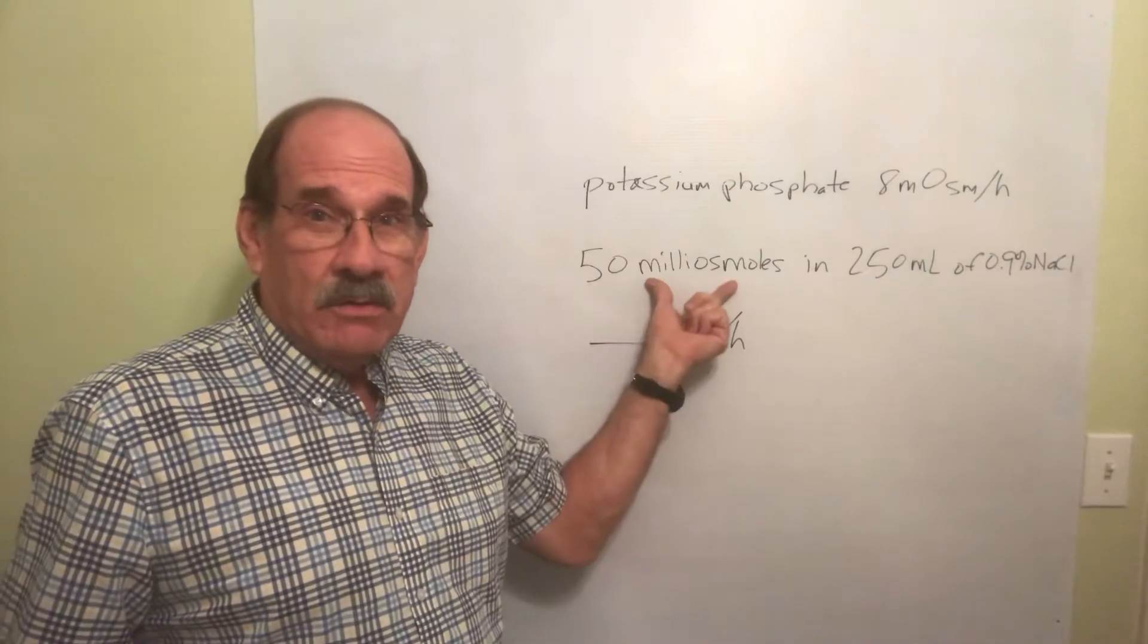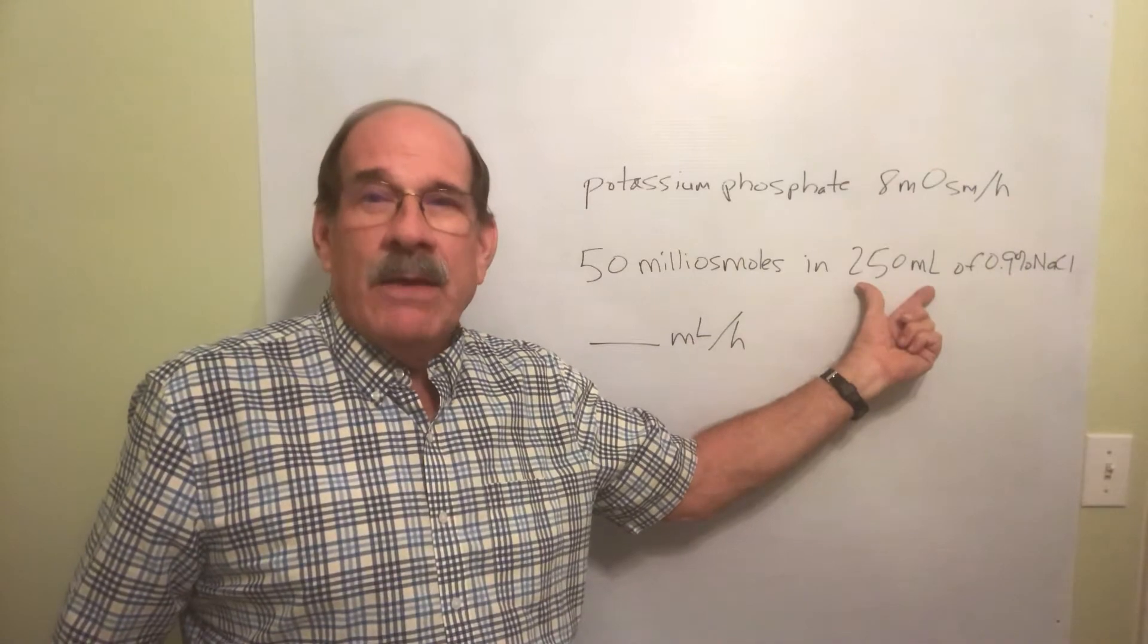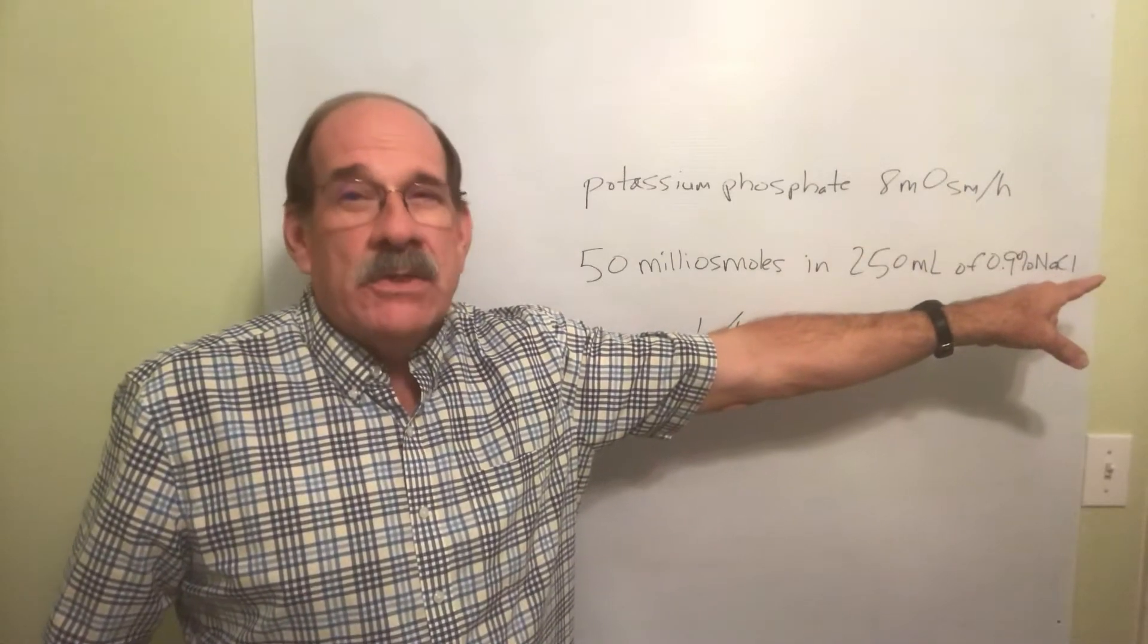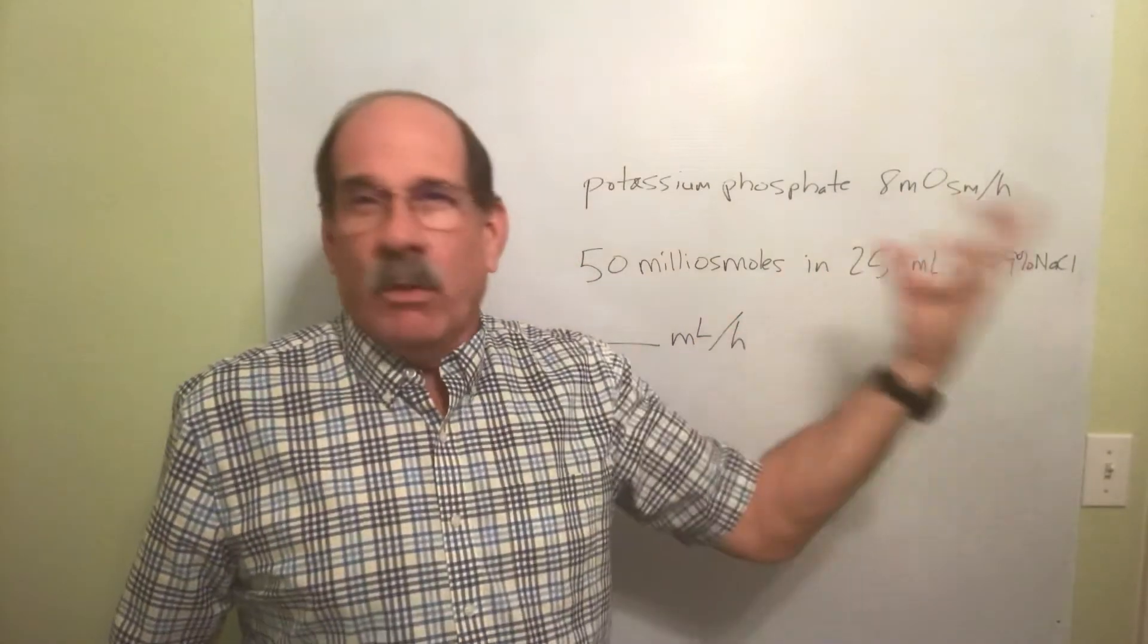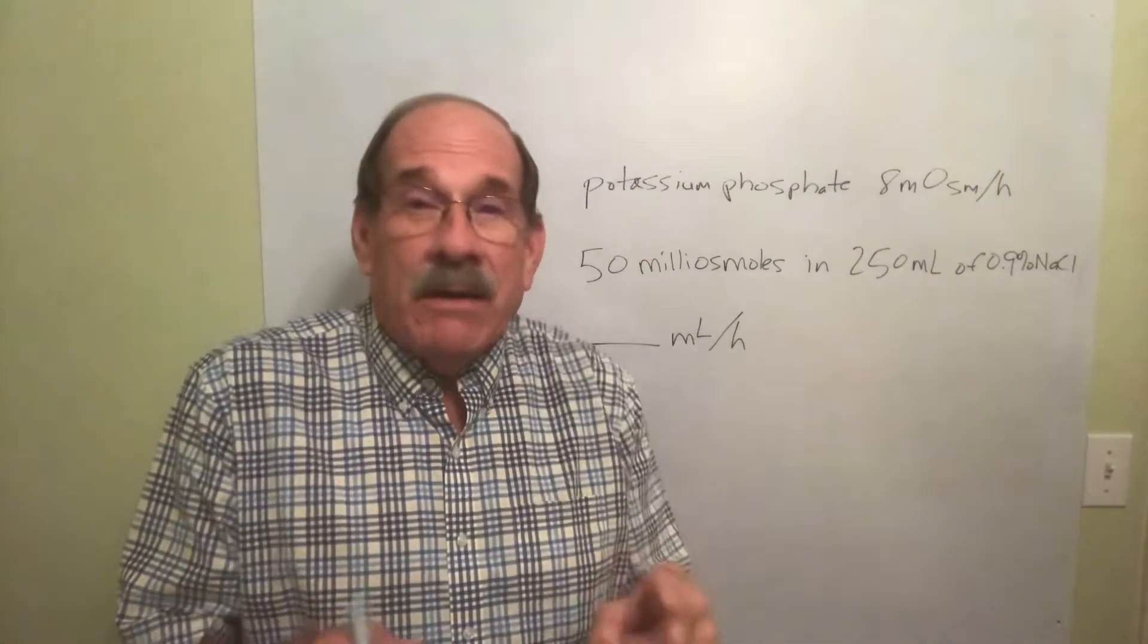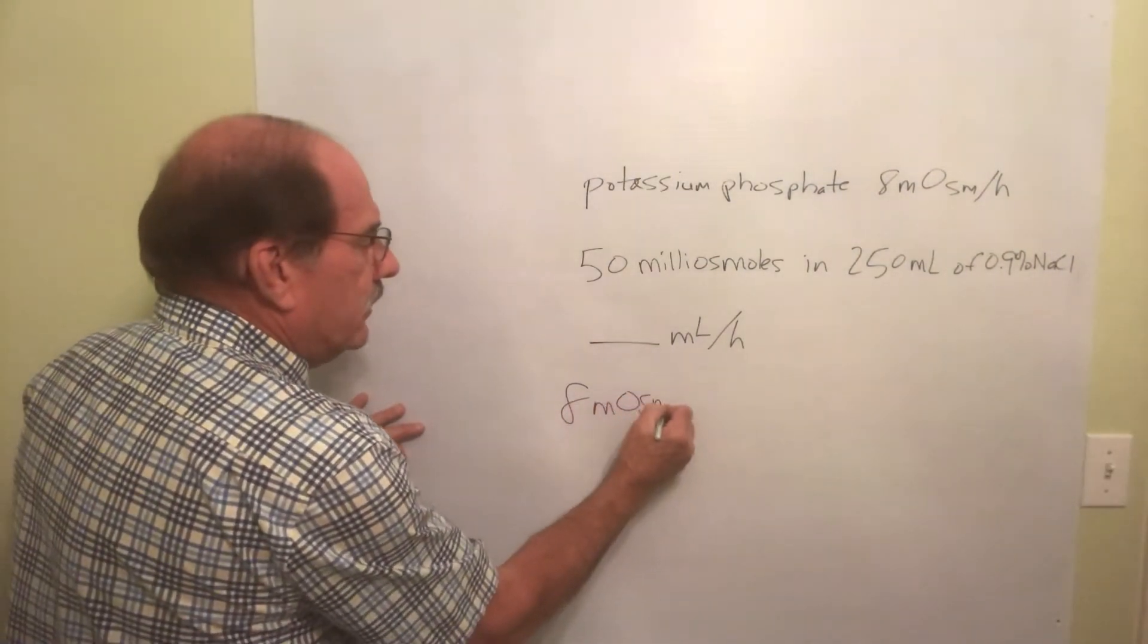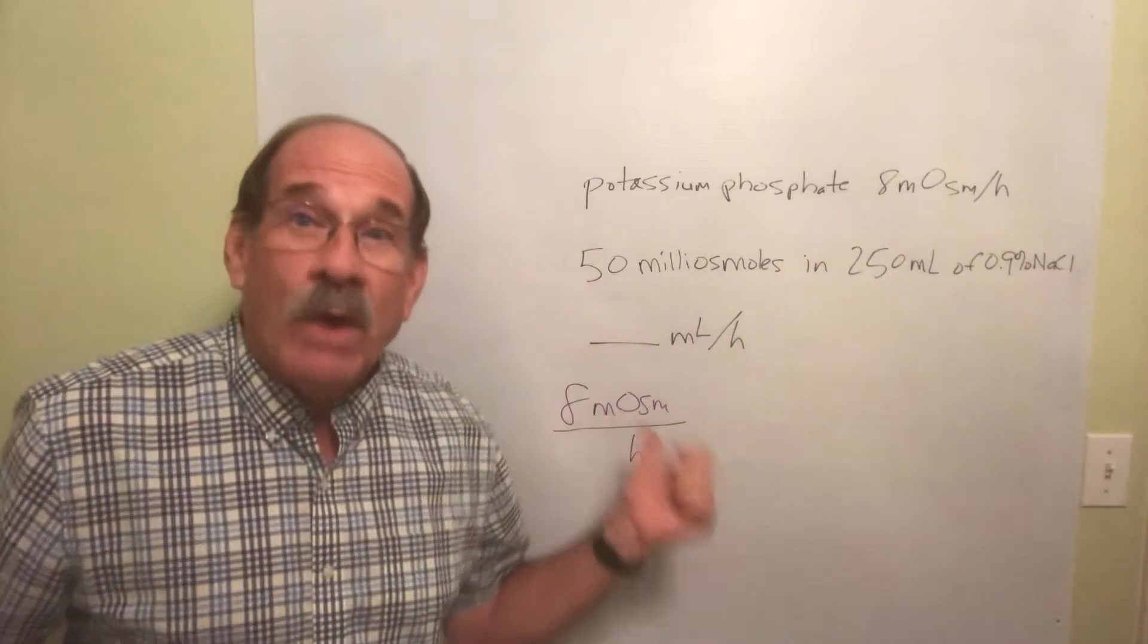It's got 50 milliosmoles dissolved in 250 milliliters of the IV fluid. But at what rate am I going to give it? Eight milliosmoles per hour. Let's say again, if you were told I'm gonna give 250 milliliters over the next whatever number of hours, I divide this by the number of hours and that's all. But I'm not doing that. I don't even know how long I'm giving it.